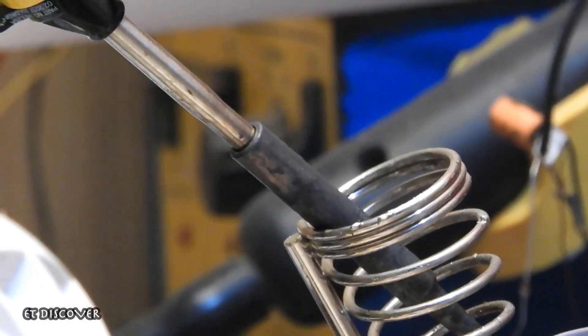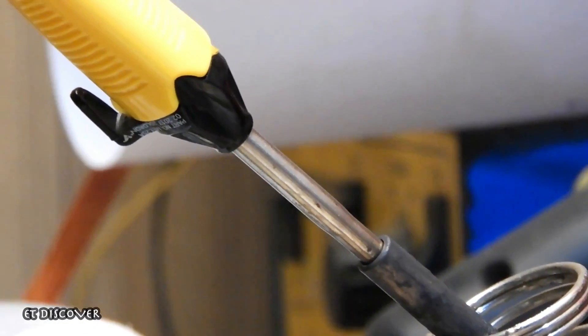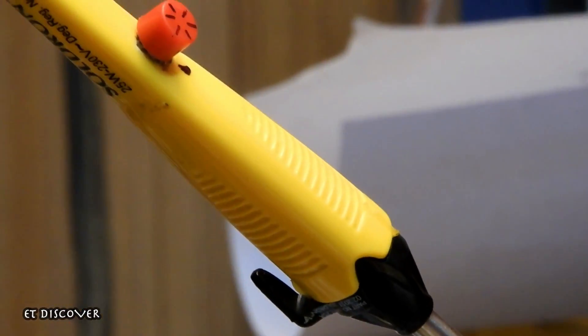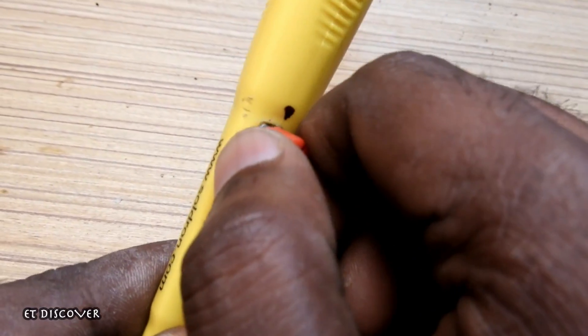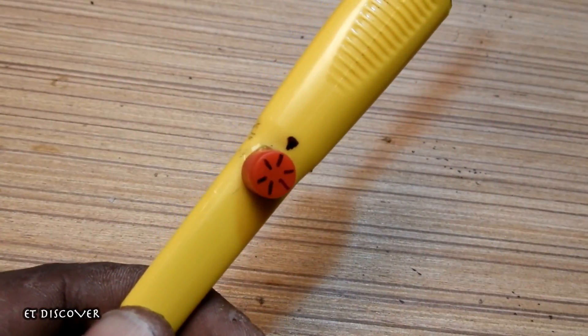So as you can see, our soldering iron is ready. And now you can control the temperature as much as you want. I made this on a 25 watt soldering iron. You can do this on 60 watt iron too.